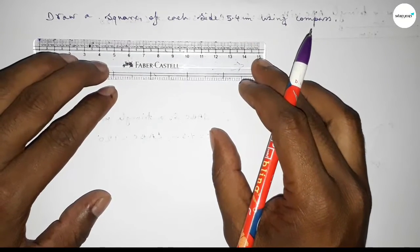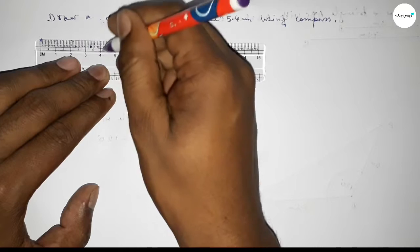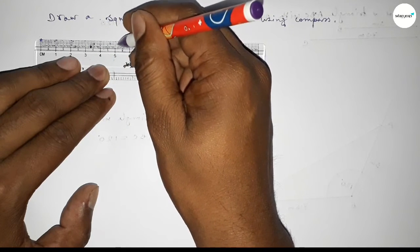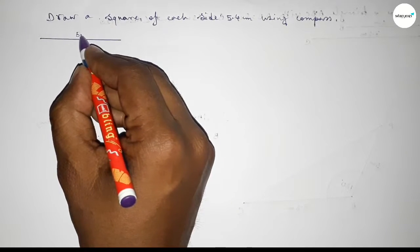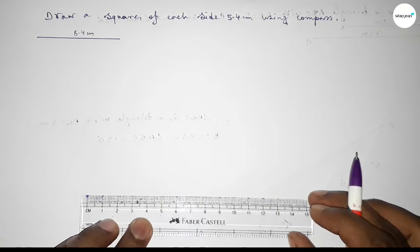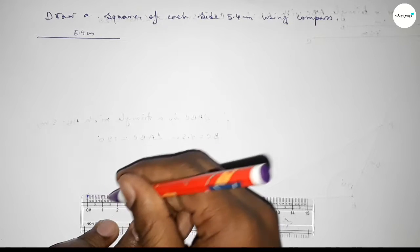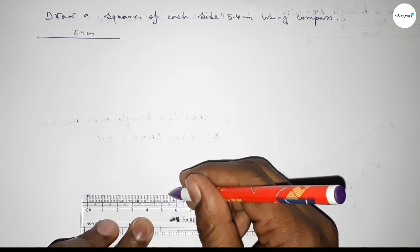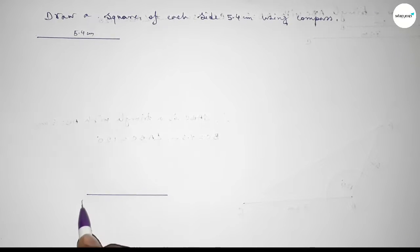First of all, we have to draw a line of length 5.4 centimeters. Starting from 0, counting 1, 2, 3, 4, 5 — this is 5.4 centimeters. We label this line, taking point B at one end and point C at the other.